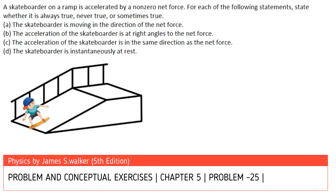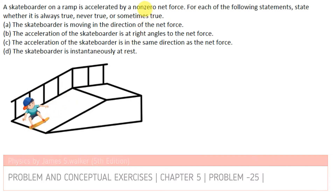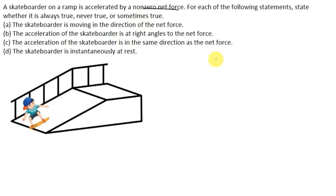In this problem we are given that a skateboarder on a ramp is accelerated by a known non-zero net force. We are given four statements and we need to tell whether the given statements are always true, never true, or sometimes true.